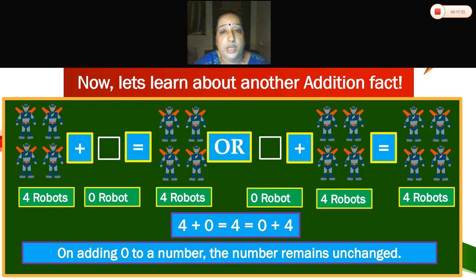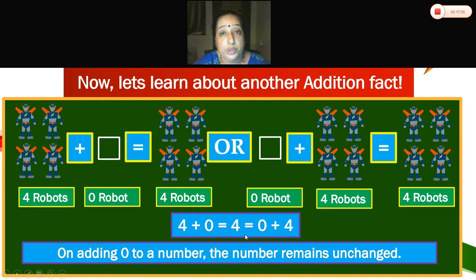The number does not change, as shown on the board: 4 robots plus 0 robots equals 4 robots, or 0 plus 4 robots equals 4 robots. So 4 plus 0 is equal to 4, and 0 plus 4 is also equal to 4. You have understood addition facts. On adding 0 to a number, the number remains unchanged.